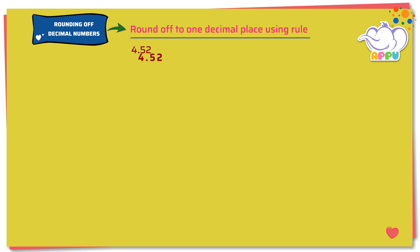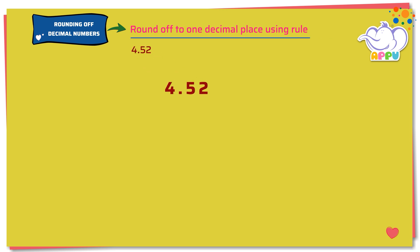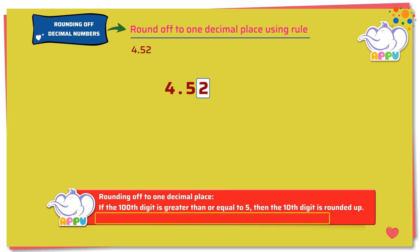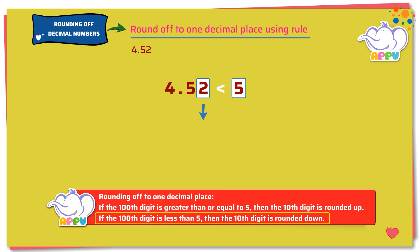4.52. To round off to one decimal place, we consider the hundredth digit of the number, which is 2. Remember the rule: if the hundredth digit of the number is less than 5, then the tenth digit is rounded down. So 4.52 is rounded down to 4.5.